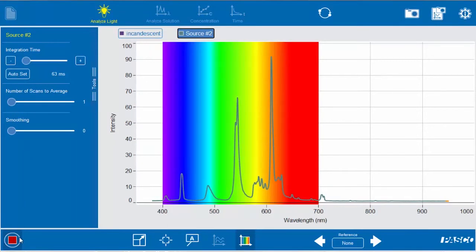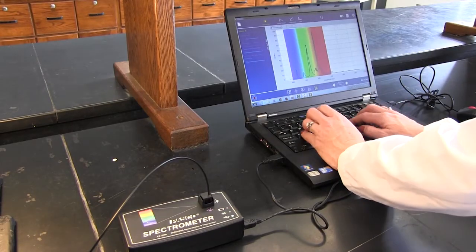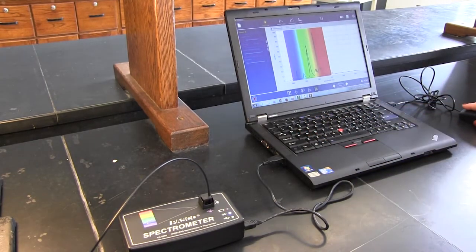Once you're happy with it, you press stop. And again so we can identify, we will overwrite and we'll just put in CFL for compact fluorescent light bulb.